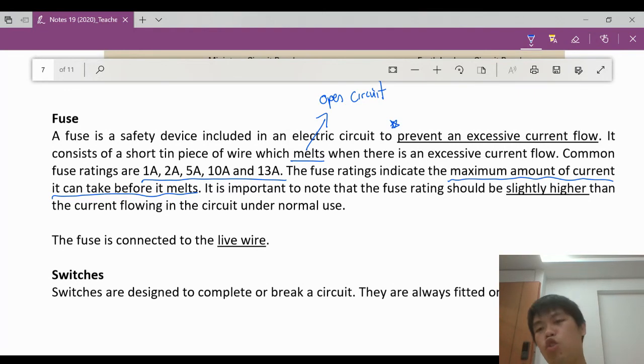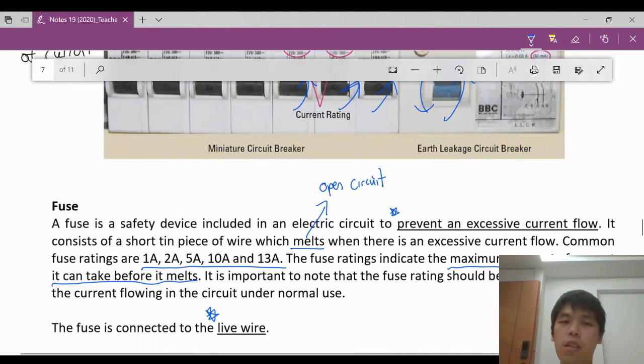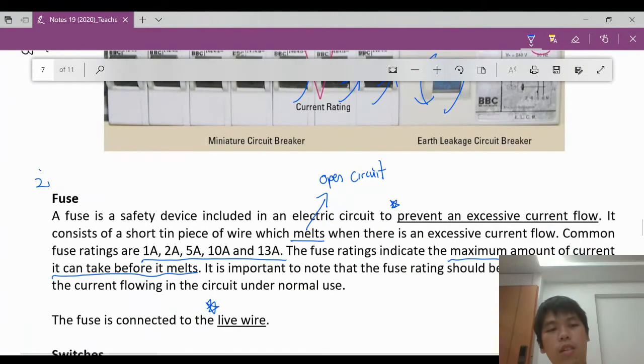So it's the maximum amount of current that it can take before it melts to protect the appliances. Please take note, the fuse rating should be slightly higher than the current flowing in the normal device that is in operation. So it should just be slightly higher and this fuse must be connected to the live wire. It must be connected to the live wire.